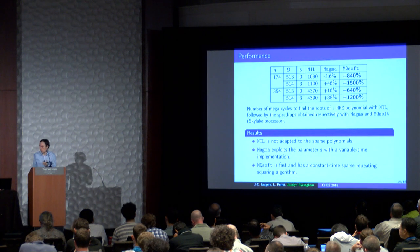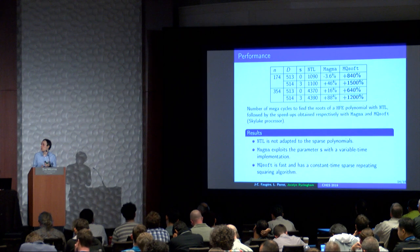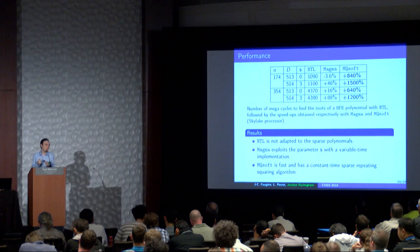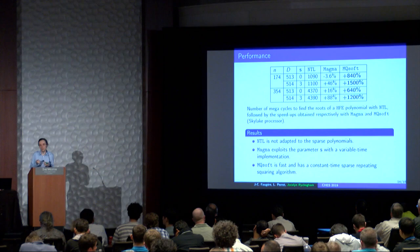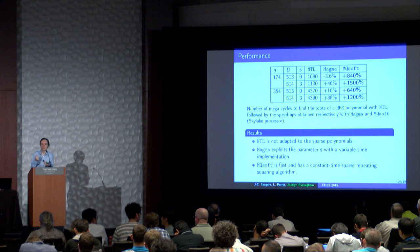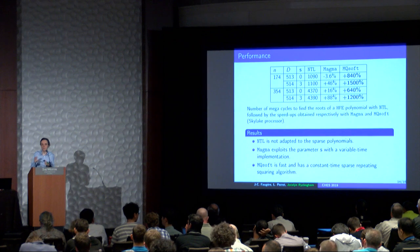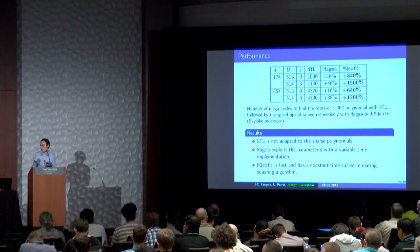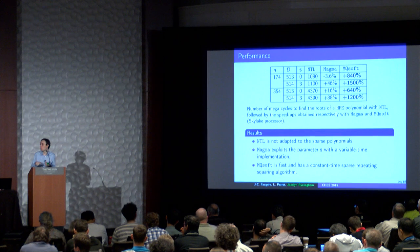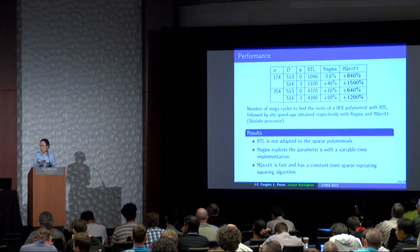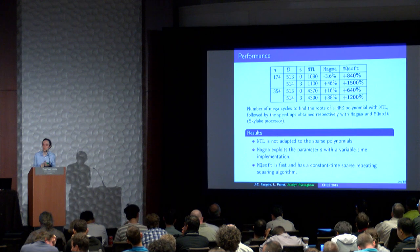For the conclusion on root finding performance, we compare NTL, Magma, and MQSoft in megacycles. We have 1,000 to 4,000 megacycles for NTL. For Magma, we have similar performance, but we remark that when we remove three terms, Magma manages to improve the algorithm — we think this is because Magma uses a variable-time implementation that checks if a coefficient is zero during multiplication. In MQSoft, since we know at compile time which coefficients are zero, we have a speedup with a constant-time implementation using the Frobenius map and the Berlekamp-style algorithm, giving a speedup factor between 7 and 13.